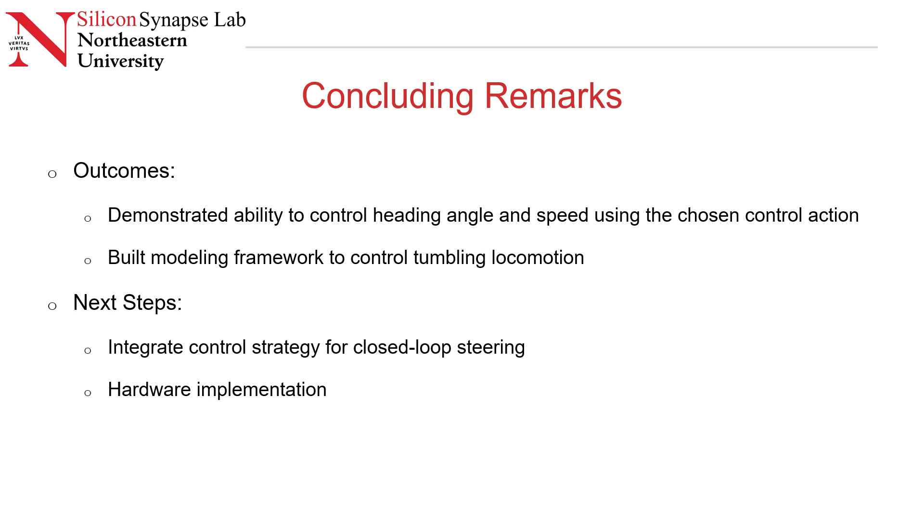With this work, we have demonstrated the ability to control heading angle and tumbling speed using the chosen control actions, U1 and U2, which affect the axis length of this reduced order model. We have built a modeling framework that lets us control this tumbling locomotion. The next step is to actually use this dynamic model that we have developed to close the loop and follow a desired trajectory, and implement this on hardware, which will also involve developing a contact estimation in order to actuate the shape invariant tumbling locomotion.